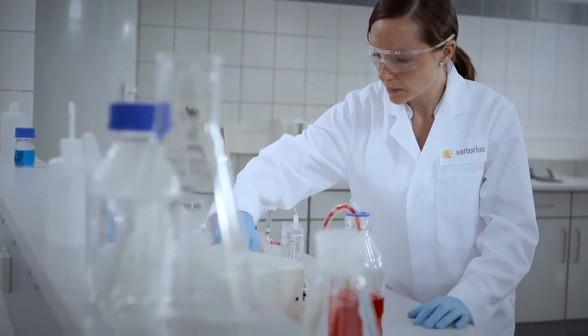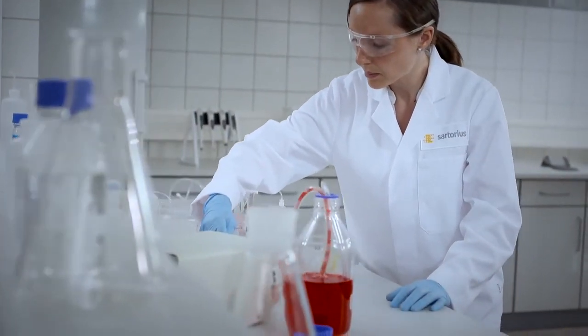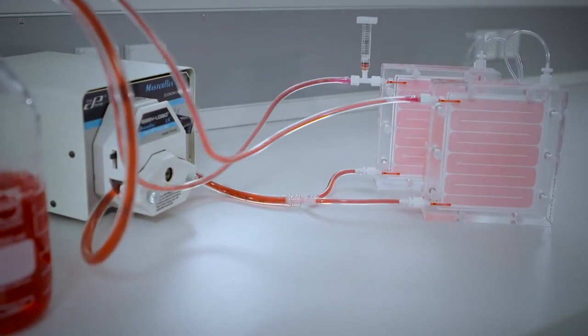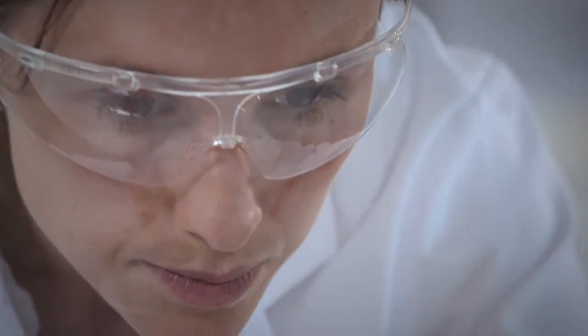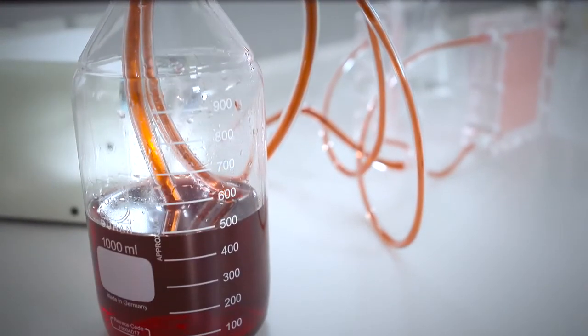The sample now recirculates through the two VivaFlow 200 cassettes while the filtrate is collected in a separate vessel. Since the sample is red, you can watch the color turn darker as the concentration of the sample increases.